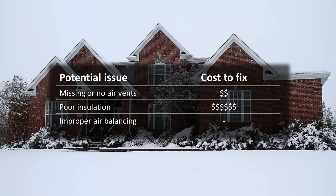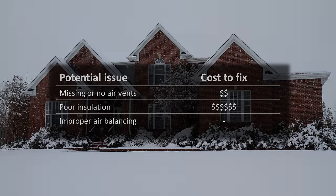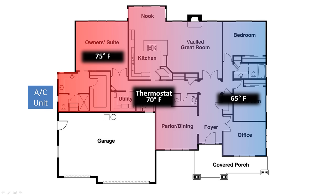The next cause is poor insulation — this could be due to old windows, leaky windows, or even bad insulation in your attic. This can cost thousands of dollars to fix. The most common problem causing cold and hot spots in the house is improper air balancing, and you can fix this for free. In fact, air balancing can even help houses that are poorly insulated.